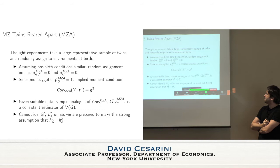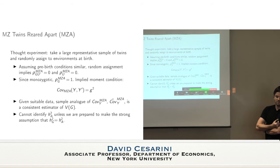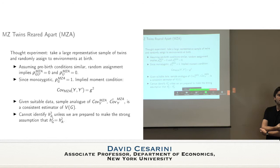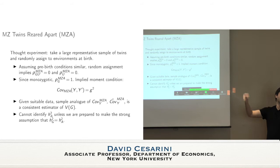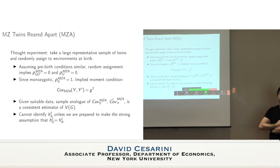MZ twins seem very useful if you want to learn about broad heritability. What are some things that go wrong in practice? It's not completely random — your G might end up correlated with the environment you're assigned to because they know something about your family background. It won't happen at birth, so pre-birth environments will be shared to some extent. Mothers of twins are not random samples — they're older, and with DZ twins there's increasing association with IVF.